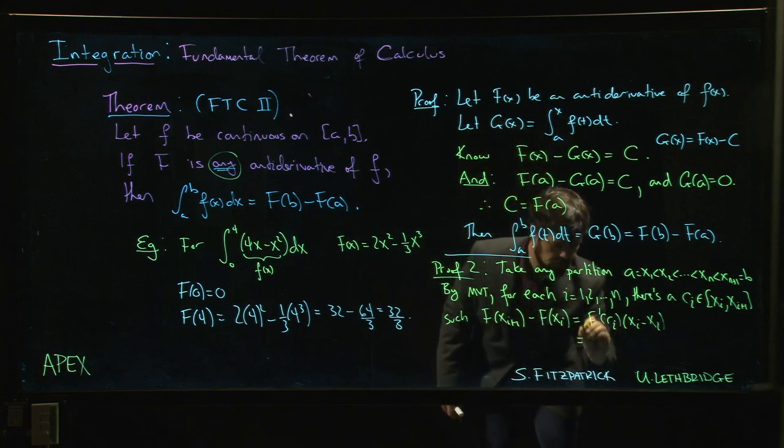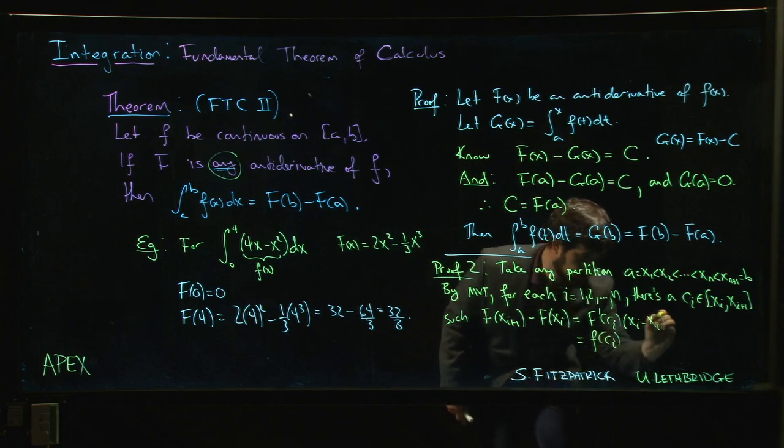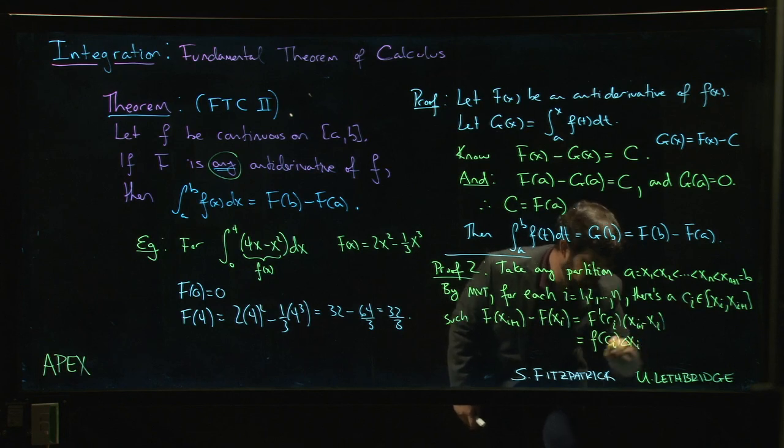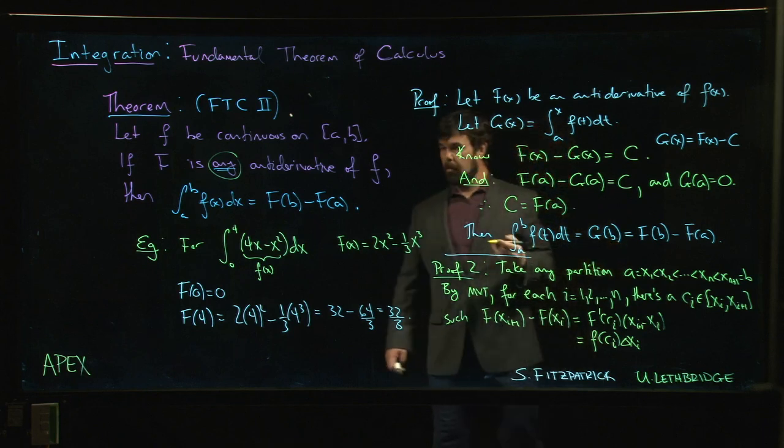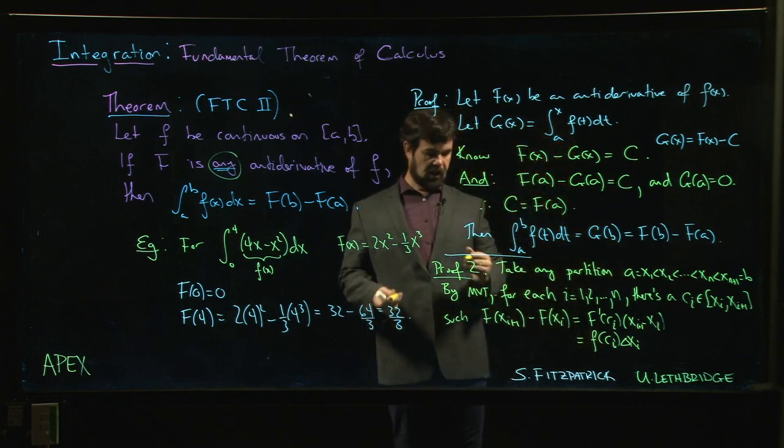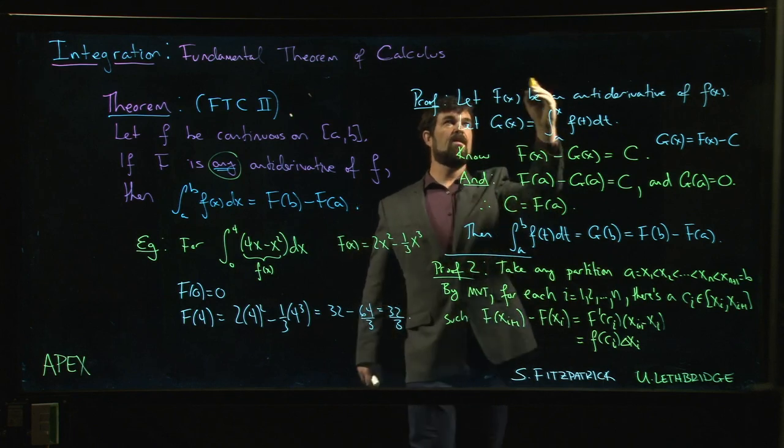But big F prime is just little f. That's f(ci), and xi+1 minus xi, that's just delta xi. So there's something like a Riemann sum thing going on here. There's exactly a Riemann sum thing going on here.